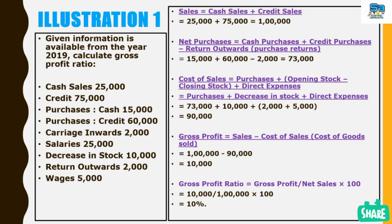For purchases, we already calculated the net purchases value: cash purchases plus credit purchases minus return outwards, or purchase return. Net purchase value equals 73,000. We have to add 10,000, which is the decrease in stock.